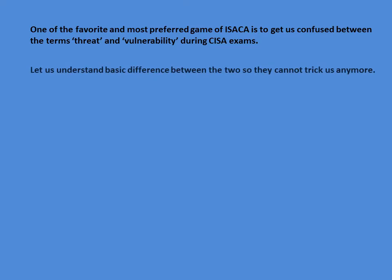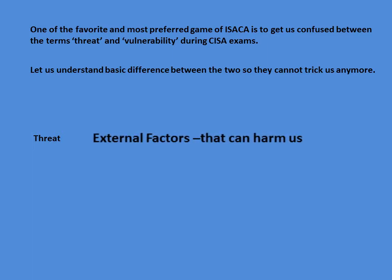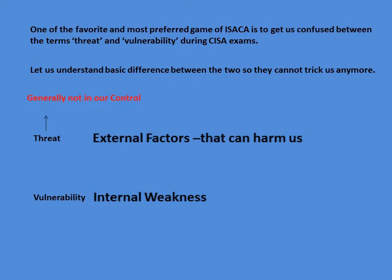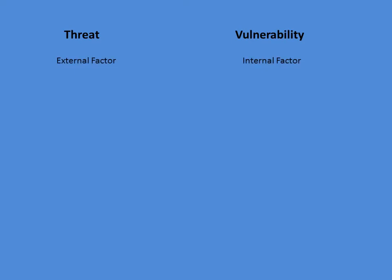Let us understand the basic difference between the two. What is a threat? It is an external factor that can harm us. What is vulnerability? It is our own internal weakness. Threat, being an external factor, is generally not in our control, whereas vulnerability, being an internal weakness, we can control it.